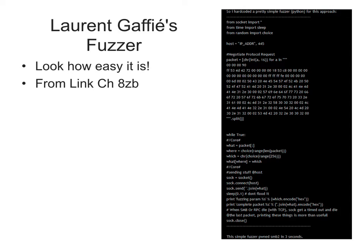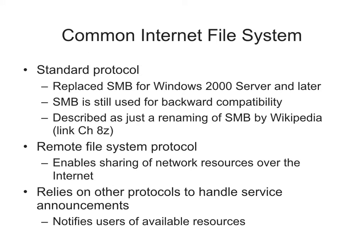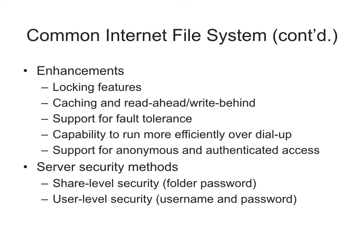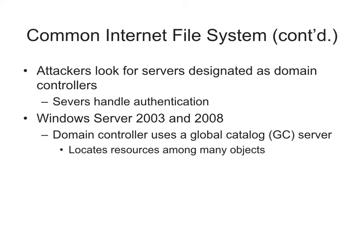Common Internet File System was an attempt by Microsoft to improve SMB — they thought it was going to be used over the internet to share files — but it never really caught on much and didn't become a product commonly used by businesses.